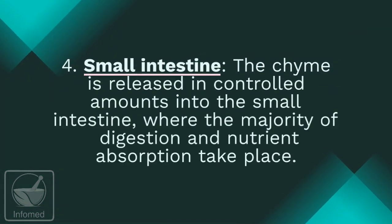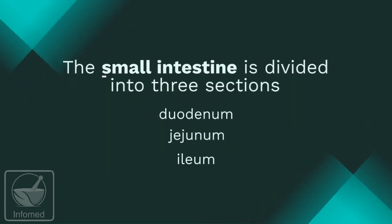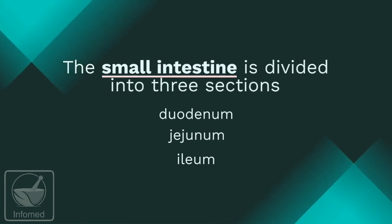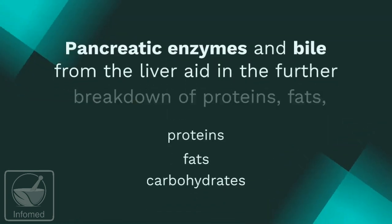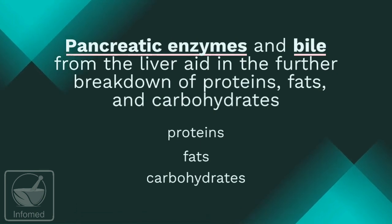Number four: the small intestine. The chyme is released in controlled amounts into the small intestine, where the majority of digestion and nutrient absorption takes place. The small intestine is divided into three sections: the duodenum, jejunum, and ileum. Pancreatic enzymes and bile from the liver aid the further breakdown of proteins, fats, and carbohydrates.